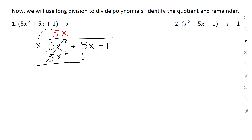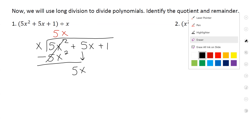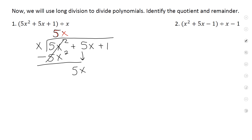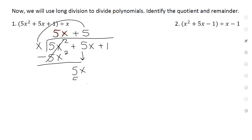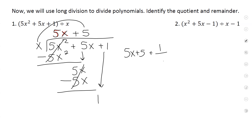Bring down the next item. x times what will give you 5x? So everyone put a plus 5 at the top. Now we multiply: x times 5 is 5x. Change the sign. What's 5 minus 5? 0. That's gone. Bring down the next item. That's going to be your remainder because there is nothing you can multiply x by to get 1. So we're going to have 5x plus 5 as your answer, and then your remainder is 1 over x — what you divided by. So you put those into fraction form.